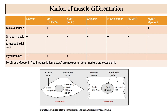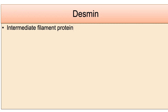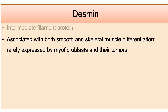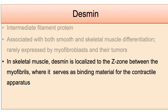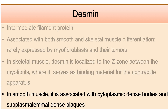The pattern of reactivity can be helpful: embryonal rhabdomyosarcoma shows focal positivity while alveolar rhabdomyosarcoma shows diffuse positivity for myogenin and MyoD1. Desmin is an intermediate filament protein associated with smooth and skeletal muscle differentiation, rarely expressed by myofibroblasts. In skeletal muscle, desmin is localized to the Z-band between myofibrils, serving as binding material for the contractile apparatus. In smooth muscle, it is associated with cytoplasmic dense bodies and subplasmalemmal dense plaques.